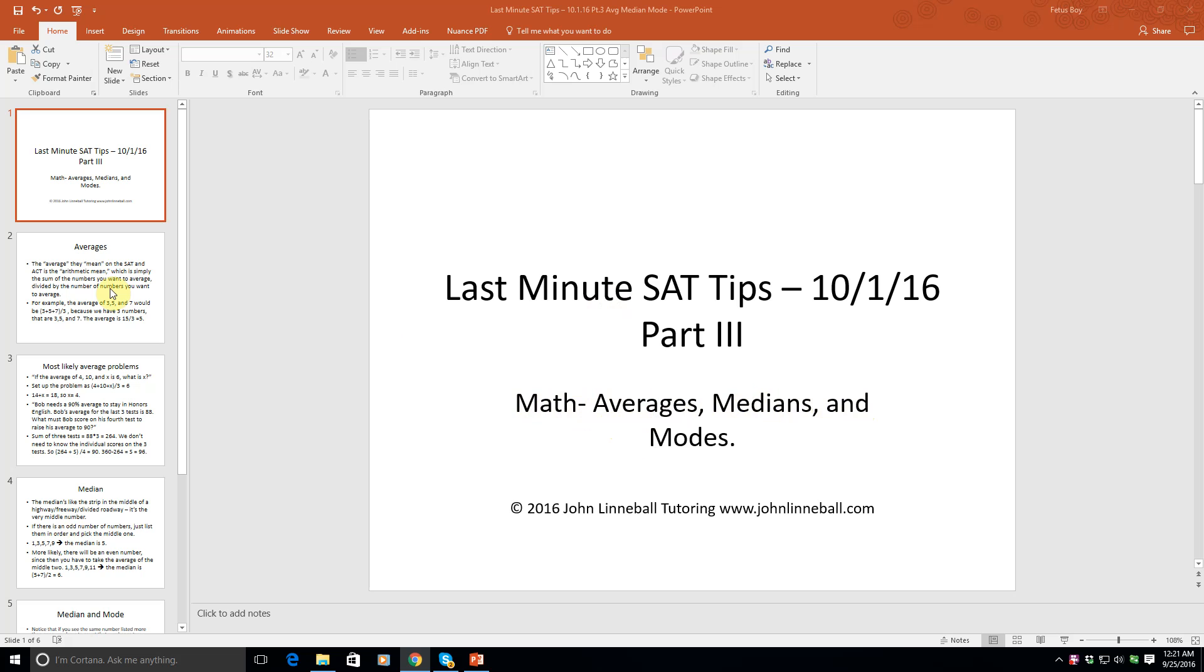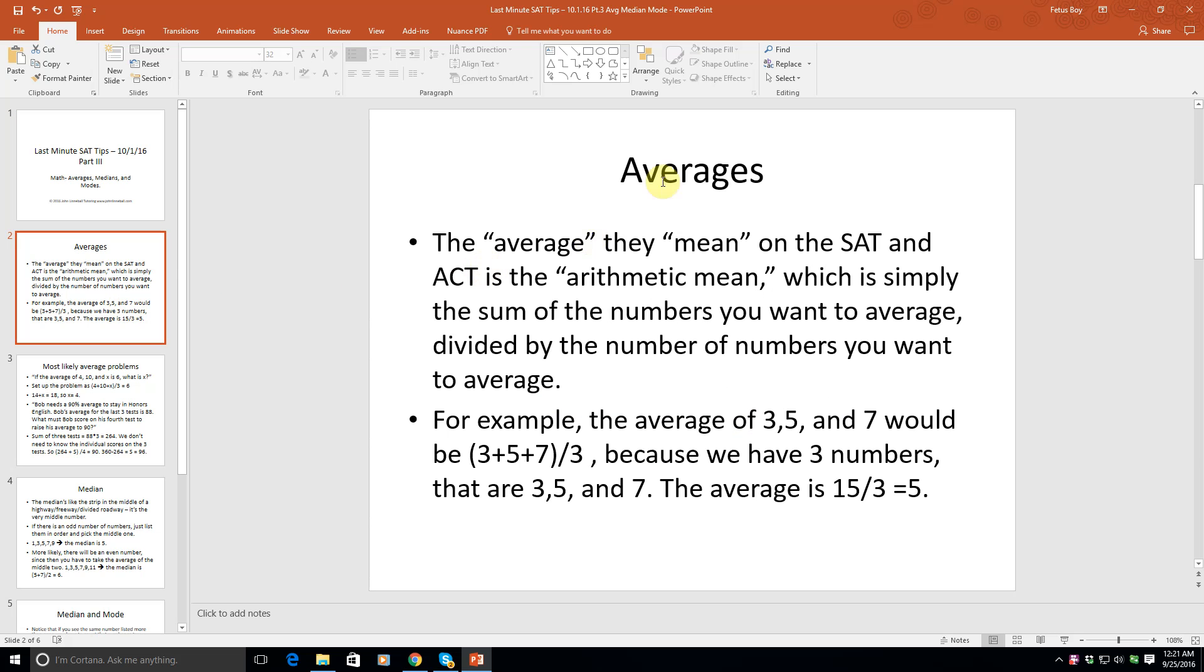The average, or mean, on the SAT and ACT is the arithmetic mean, which is simply the sum of the numbers you want to average divided by the number of numbers. They always put it as 'average (arithmetic mean)' on the SAT, so don't let that throw you. They mean exactly what you think they mean.